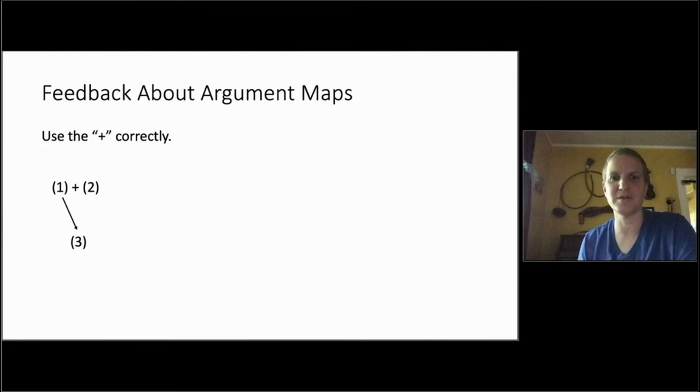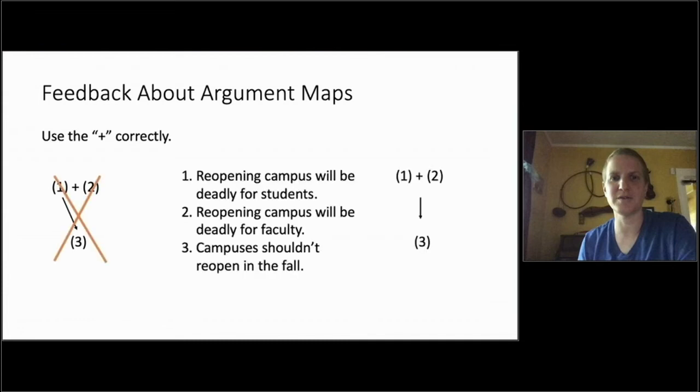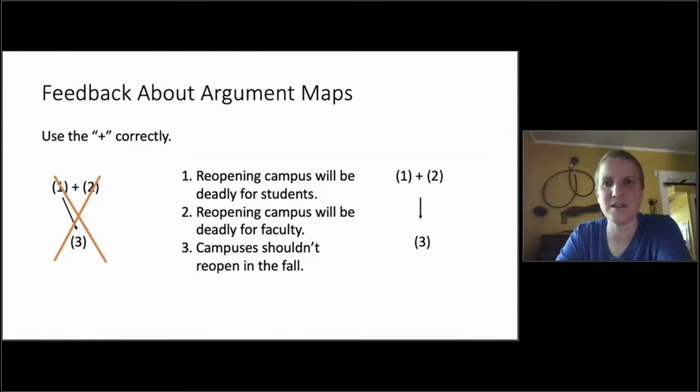You've got to make sure you use the plus sign correctly. So I saw a number of arguments like this, which here the two is just idle, it doesn't even matter, because it's not being involved in supporting number three the way it's represented. So in this case, if you're saying one supports three, why is it even connected to the two? So that's not the way you should represent things. Here's another error that I saw. So you put the plus sign where really you should have had two separate arrows pointing. So here we have two reasons that campuses shouldn't reopen in the fall.